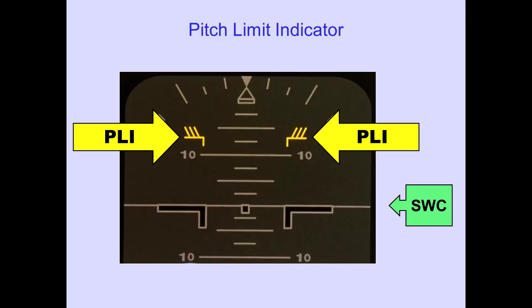A pitch limit indicator is displayed when flaps are extended. The pitch limit indicator, or PLI, indicates the pitch attitude at which the stick shaker would occur for existing flight conditions. The stall warning computer provides this information.